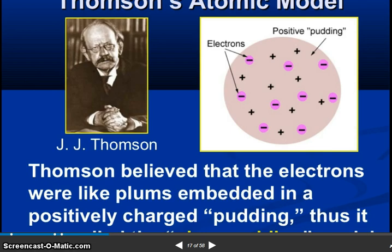So Thomson atomic model. J.J. Thomson believed that the electrons were like plums embedded in a positively charged pudding. You can see here.